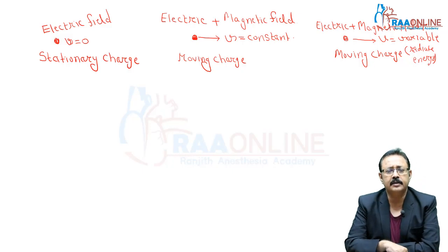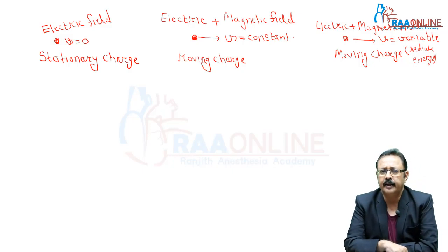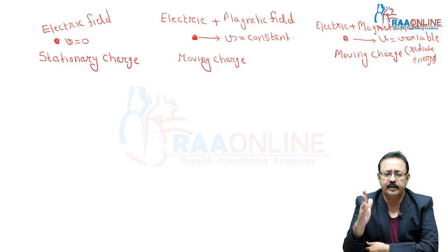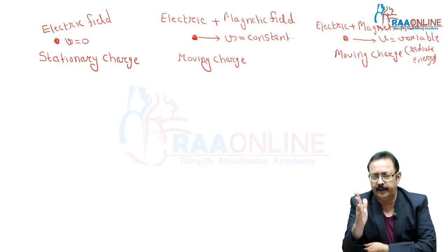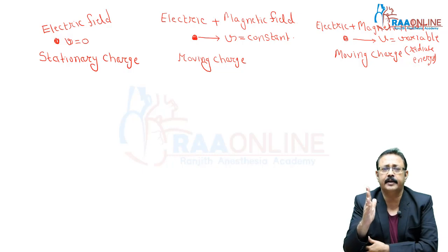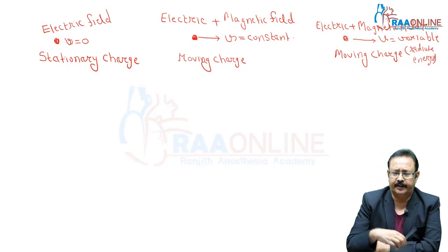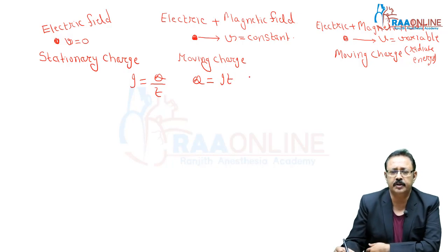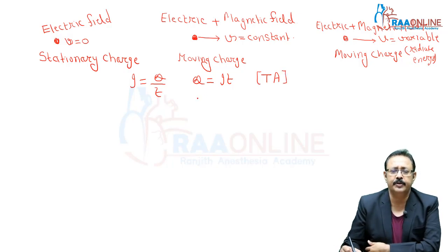What is charge? Charge is a fundamental physical quantity in the MKSQ system. Initially this system was used, but now in SI units we take current as the fundamental physical quantity. So now charge is a derived unit whose dimensional formula is T·A, and its unit is Coulomb.